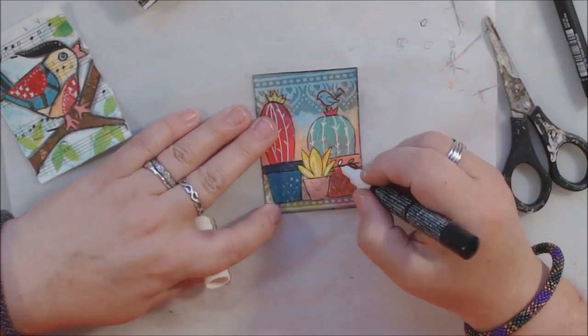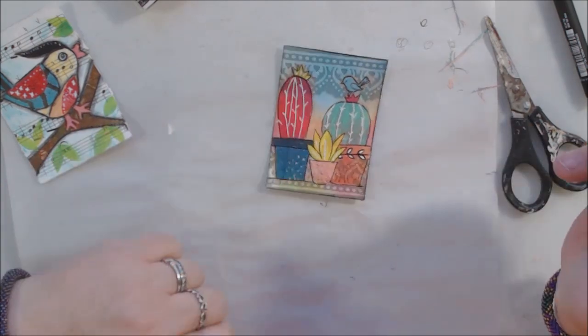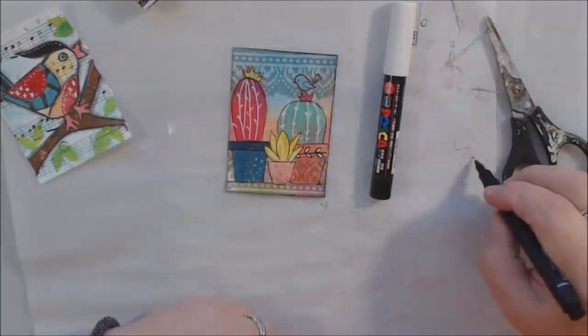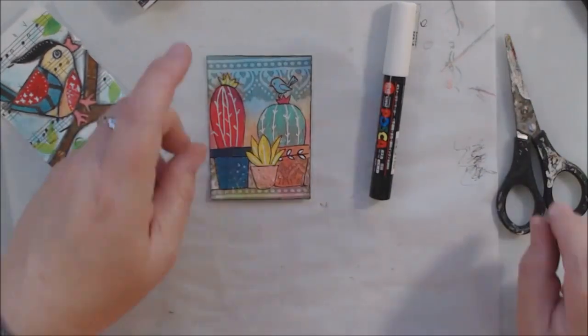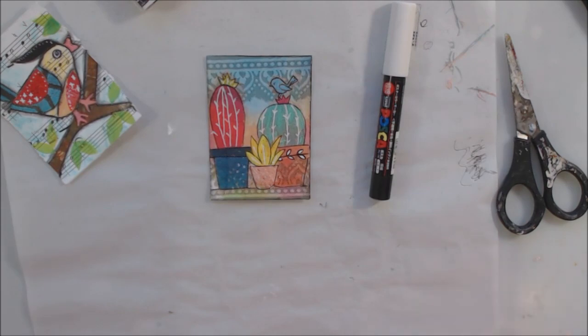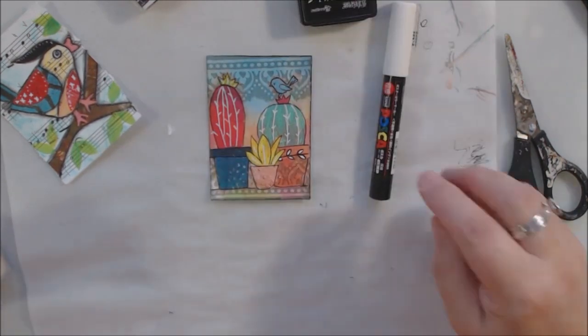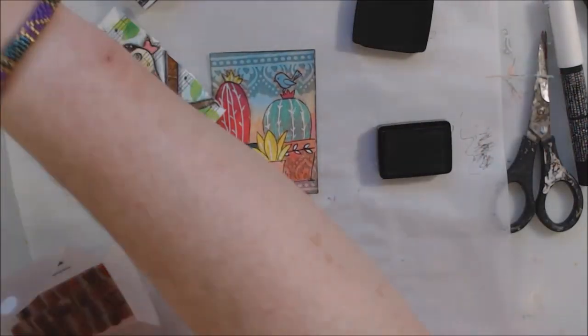I went around all the shapes, then used my fine tip white Posca pen to do a few little lines here and there. I colored in the birdie that was just drawn on there with black. I touched up one cactus where it was torn.